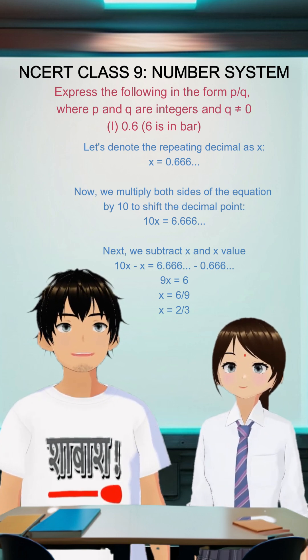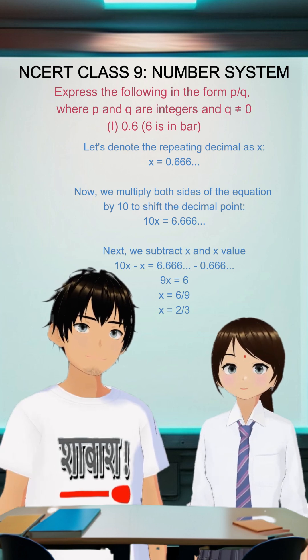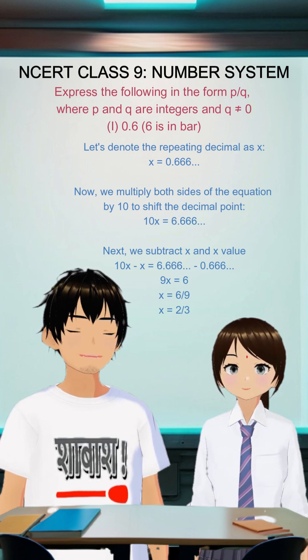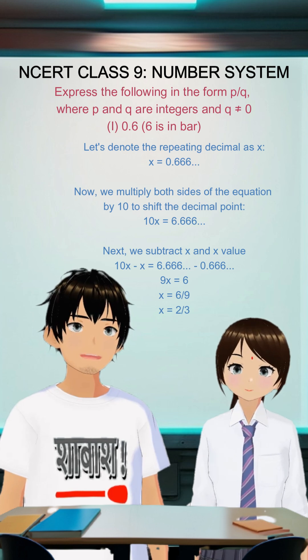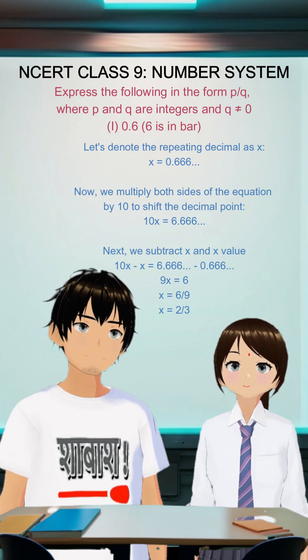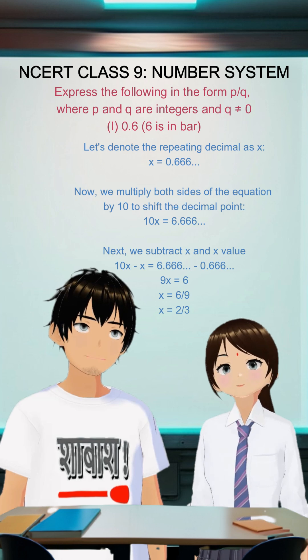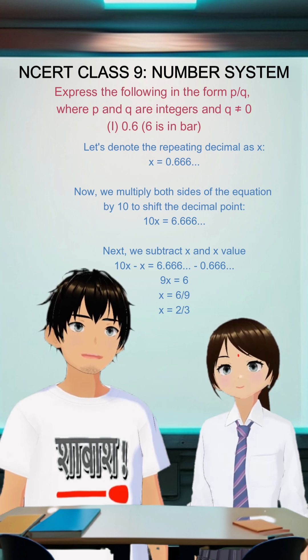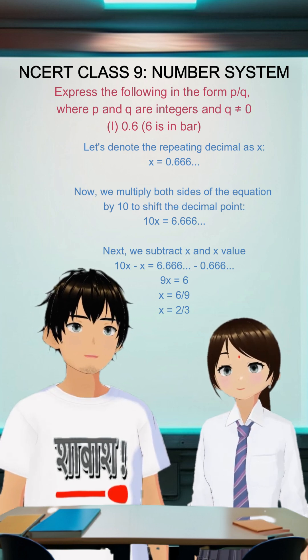Next, we subtract the X values. 10X minus X equals 6.666 minus 0.666. 9X is equal to 6. X equals 6 ninths. X equals 2 thirds.